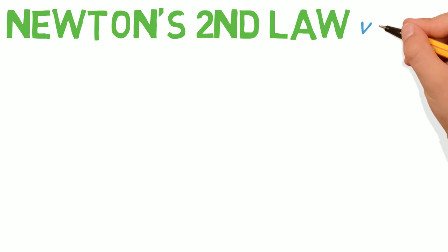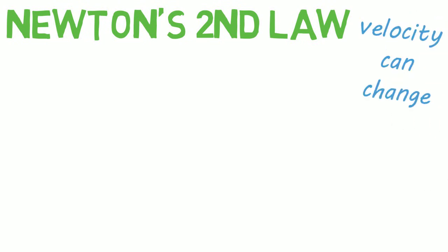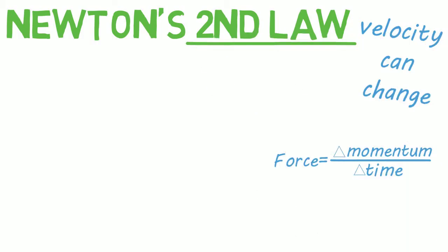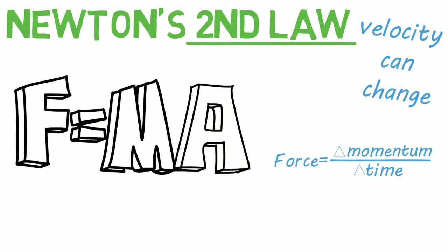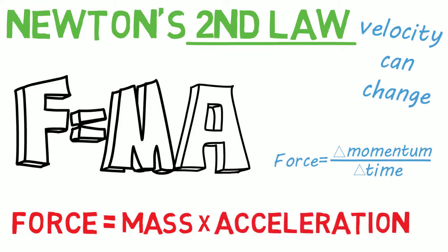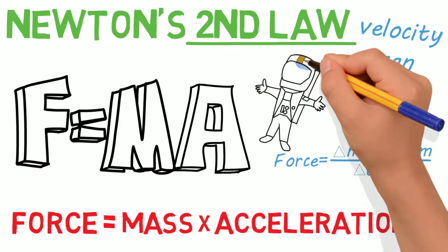Law number two says velocity can change a bit when an external force shows up and rearranges it. Force equals change in momentum per change in time, but consider when mass is constant with this next rhyme. The tip for the second law to remember today is the formula F equals M times A. Force equals mass times the acceleration — just ask your friendly astronaut at the space station.